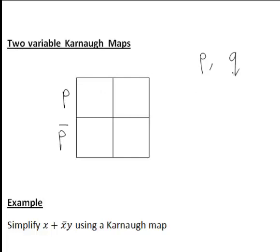Similarly, we could let the different states of Q represent the two columns of the Karnaugh map. So the first column could be when Q is closed, and the second column Q bar when Q is open.